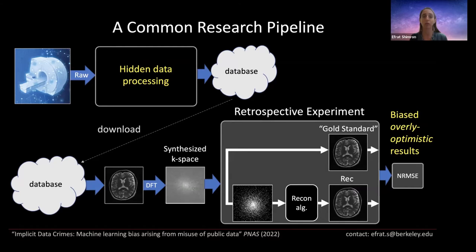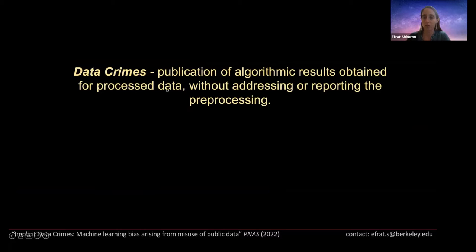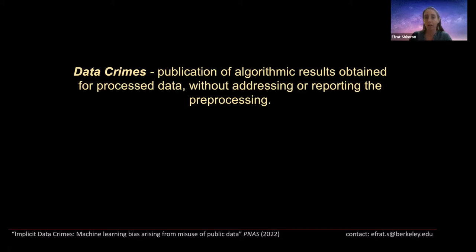One key point we're trying to convey is that you cannot simply compare papers by looking at error metrics and taking the better one. You have to look deep into the details and examine which data they used and how the algorithm was evaluated. Data crimes refers to publication of algorithmic results where the preprocessing is simply not reported. However, in some cases it is impossible to get raw k-space data — for example in dynamic MRI scans where the image changes very quickly. When people need to use preprocessed data, we recommend simply describing exactly the preprocessing steps so results can be properly contextualized.